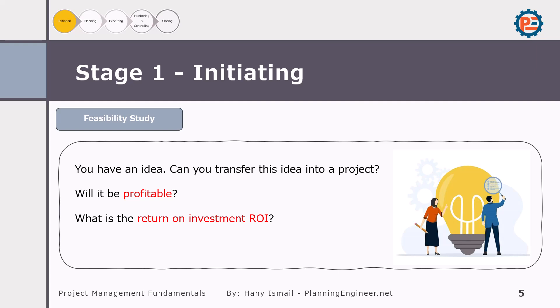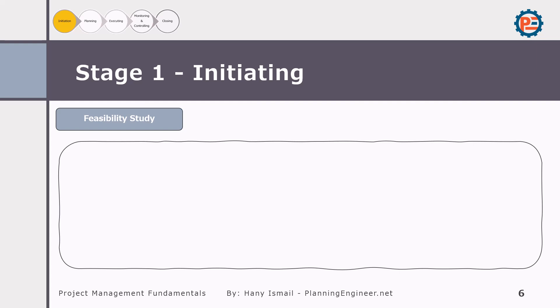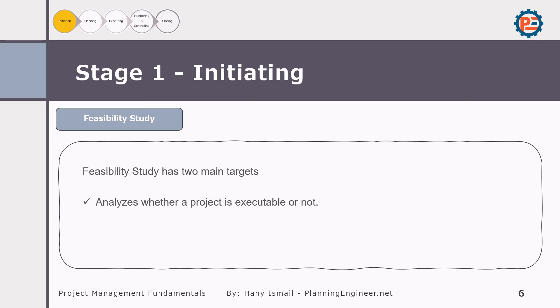Another question to ask during the feasibility study: what challenges or problems might we face? Sometimes constructing a project in a particular area would be very risky, so changing the location can make the project more profitable. The feasibility study has two main objectives: first, analyzing whether the project is executable; second, helping prevent you from starting projects that are infeasible or too risky.